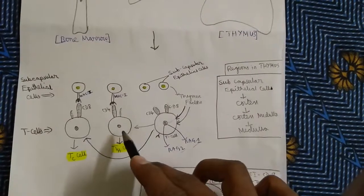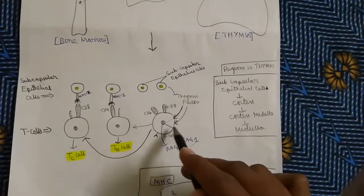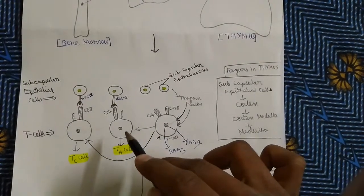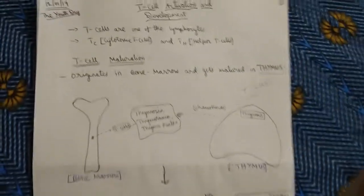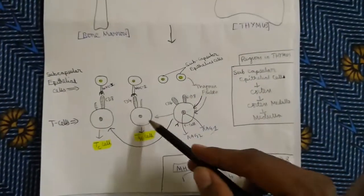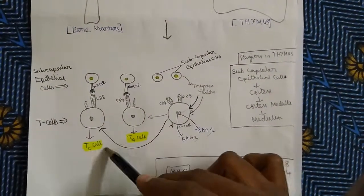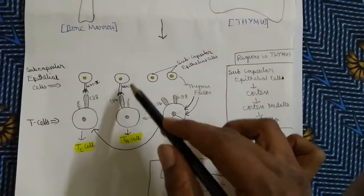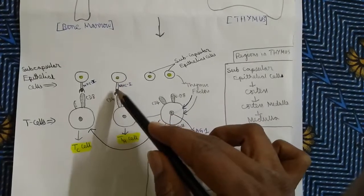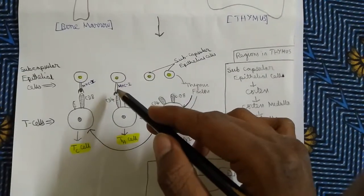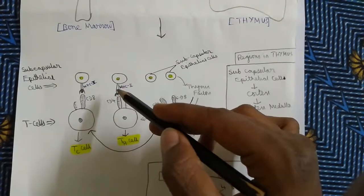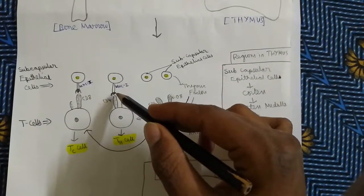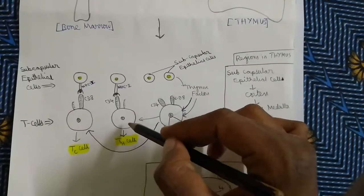Now the T-cell goes to the second step. In the first step, the enzymes are produced and the receptors are formed. In the second step, this is where the T-cell gets converted into either a TC cell or a TH cell. The ordinary T-cells may get converted into either TC or TH. In the subcapsular epithelial cells, one MHC molecule is produced — for example, MHC-2. When the CD4 receptor on T-cells reacts with the MHC-2 molecule, the ordinary T-cell gets converted into a TH cell.